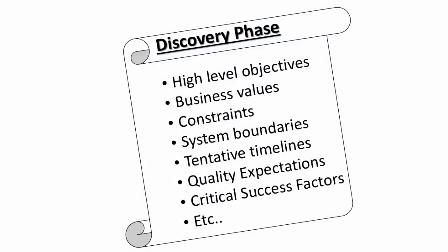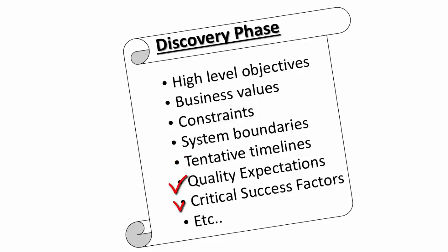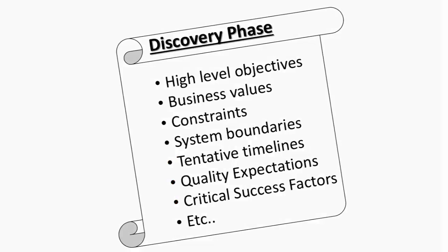Discovery is the initial part of Sprint Zero when the following things are discovered: high level objectives of the project, business value gain expected out of the solution, constraints with respect to the implementation, system boundaries to understand what is within and out of scope for development, timelines for the releases, and quality expectations and critical success factors.